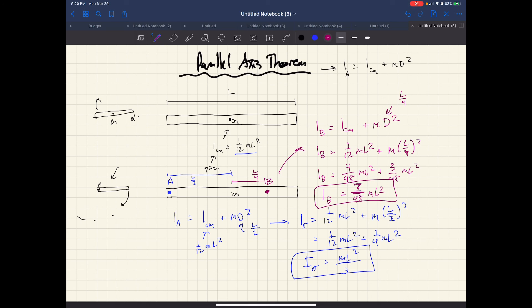And yeah, that's significantly less than 1/3 ML squared, but not quite as low as 1/12, which would be the minimum rotational inertia rotated about its center of mass. So that is how we would use the parallel axis theorem.